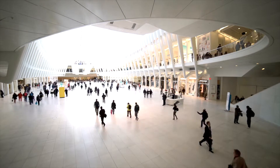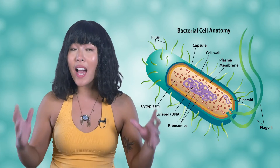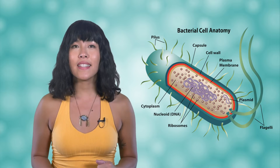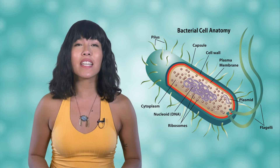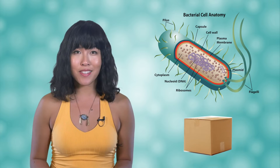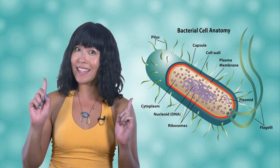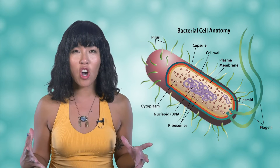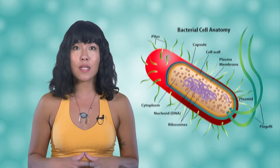Think of the cell membrane like the gatekeeper. Outside the cell membrane, the next layer of protection is the cell wall — a rigid layer that gives support to the cell and helps it maintain its shape. There is a third layer outside the cell wall called the capsule. This layer tends to be sticky and helps the cell attach itself to surfaces, which is exactly why you should scrub your hands really well when you wash.